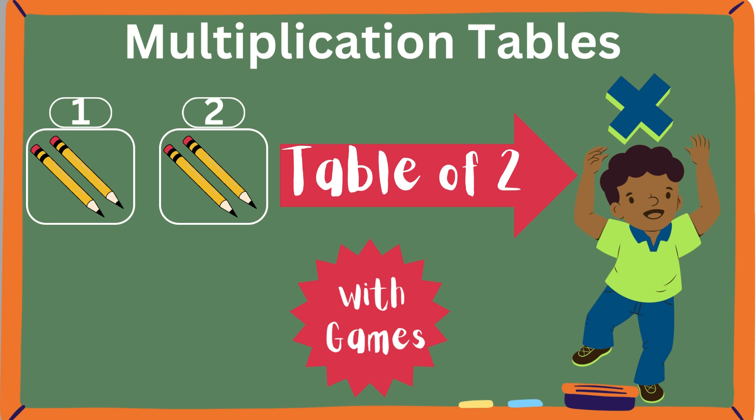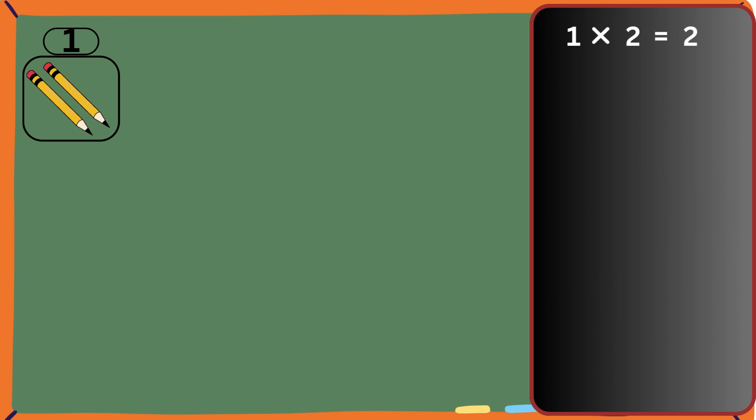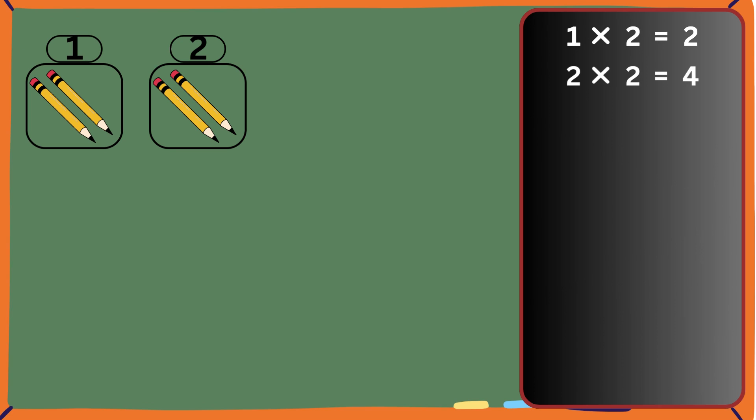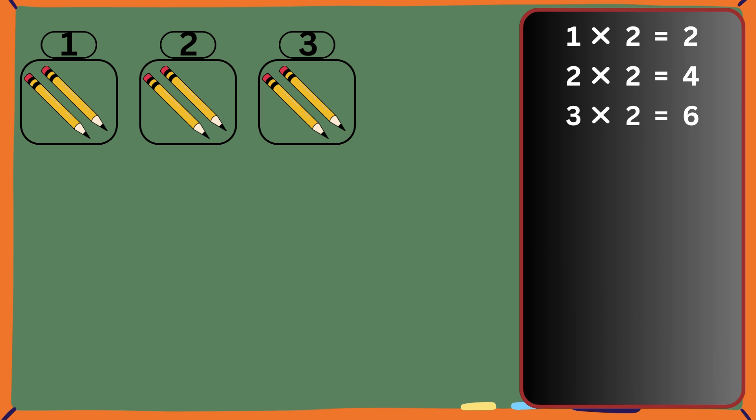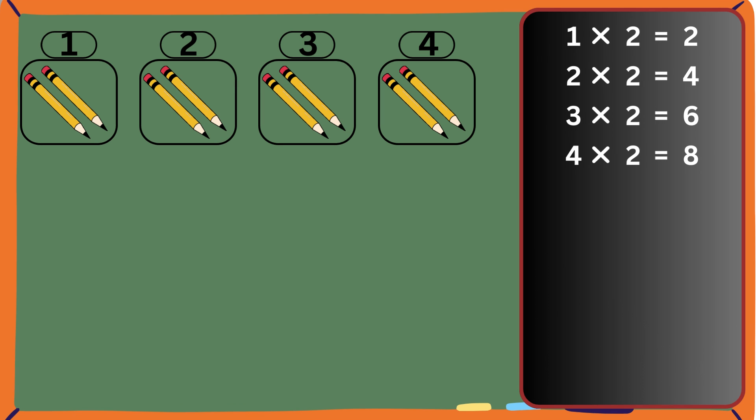Let's learn table of two. One twos are two. Two twos are four. Three twos are six. Four twos are eight.